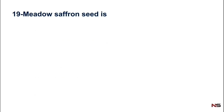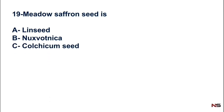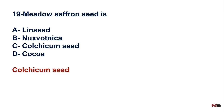Next question: Meadow saffron seed is a synonym for which drug? Options include linseed, Nux vomica, Colchicum seed, and Cocoa. The correct answer is Colchicum seed — Colchicum seed is also known as meadow saffron. Colchicum seed is also an amino alkaloid, similar to Ephedra. Ephedra is known as mahong, and Colchicum seed is known as meadow saffron — these are important synonyms in this category.